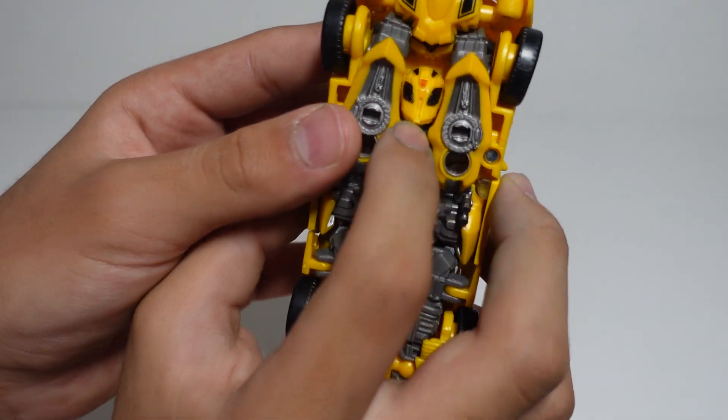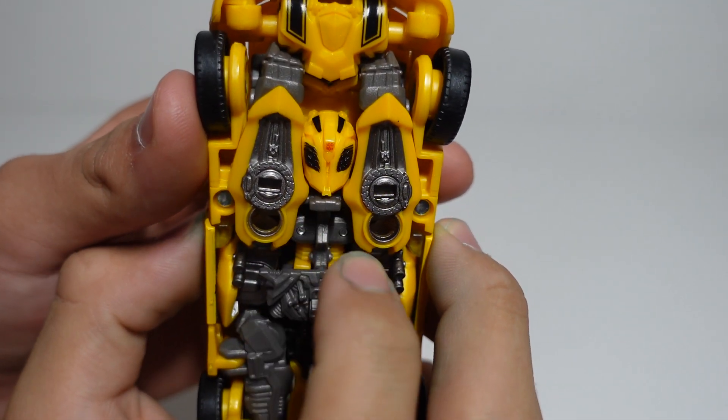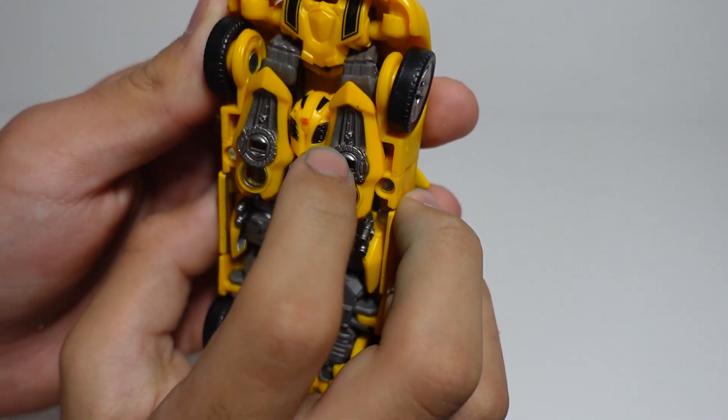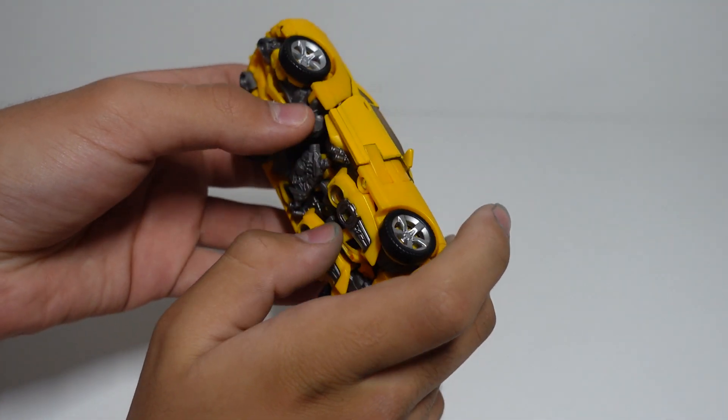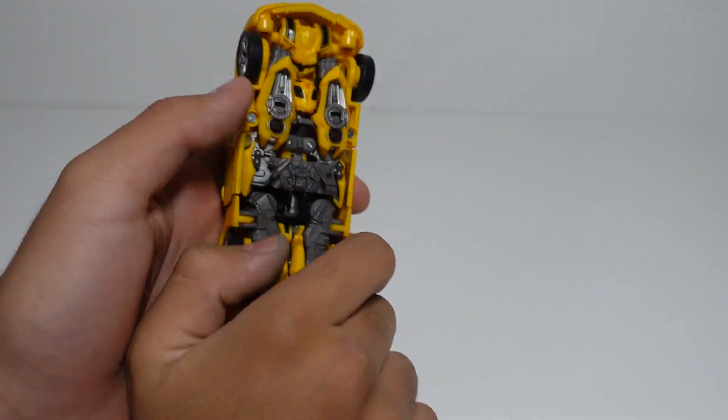Right here you can see his face. He comes with his battle mask ready to fight, other than his regular Bumblebee face. I really do like his battle mask, but I'd prefer to have his Bumblebee face instead.